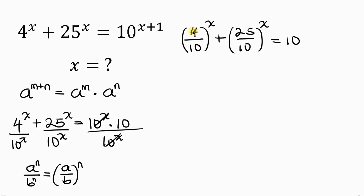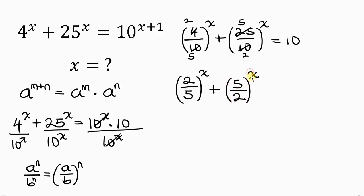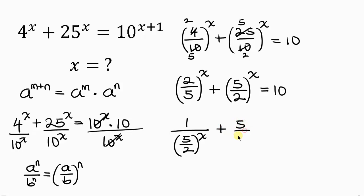Now let's break this down. 4 divided by 2 is 2, 10 divided by 2 is 5, so we have (2/5) all raised to the power of x. And 25 divided by 5 is 5, 10 divided by 5 is 2, so we have (5/2) all raised to the power of x, and this is equal to 10. Notice that (2/5)^x is the inverse of (5/2)^x, so we can write this as 1 over (5/2)^x plus (5/2)^x equals 10.